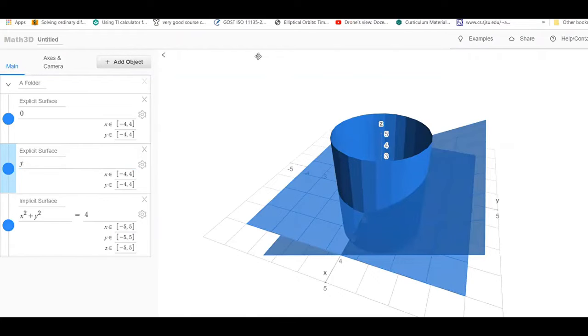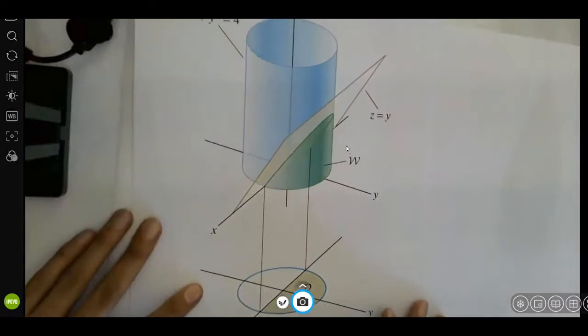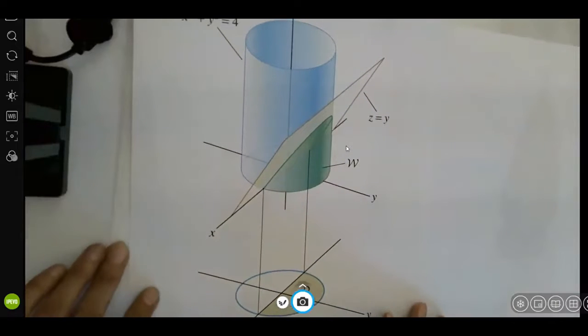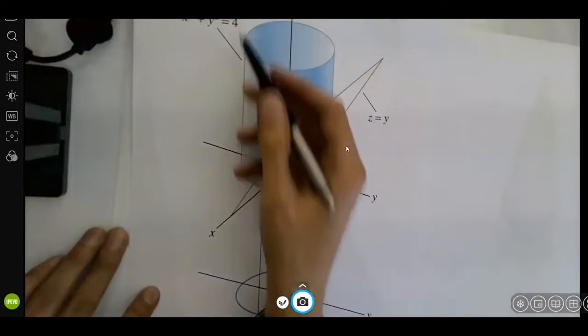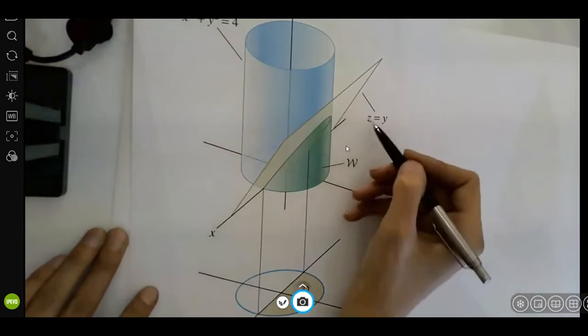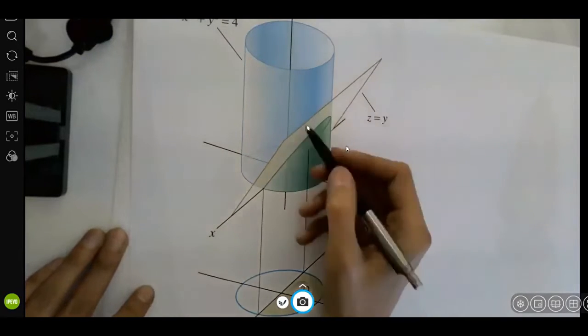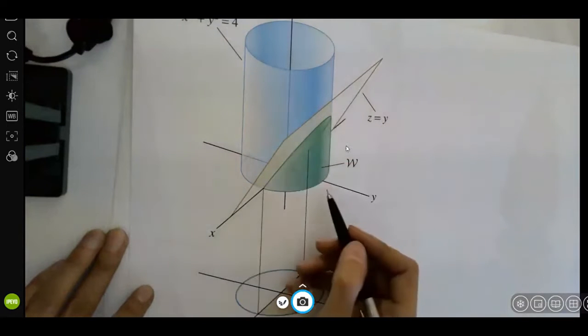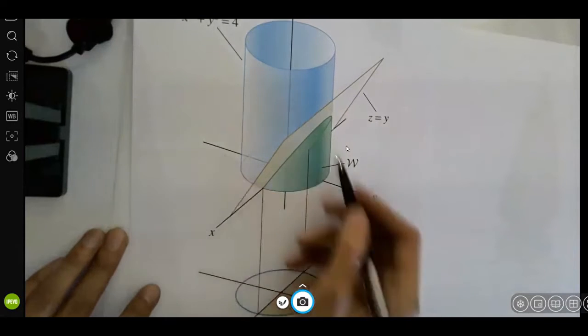Let's take a look at a better visualization. Here we go. So, here you have your cylinder and you have your plane z equals to y, as you can see, that cuts through the cylinder. And of course, you have z equal to 0, which is just down here. That's where it stops.